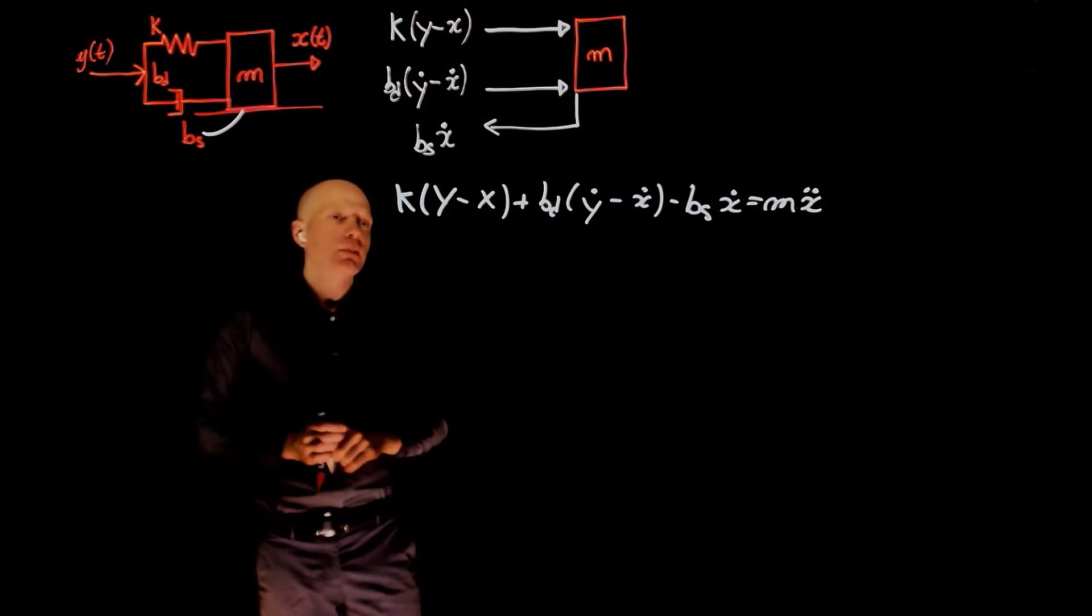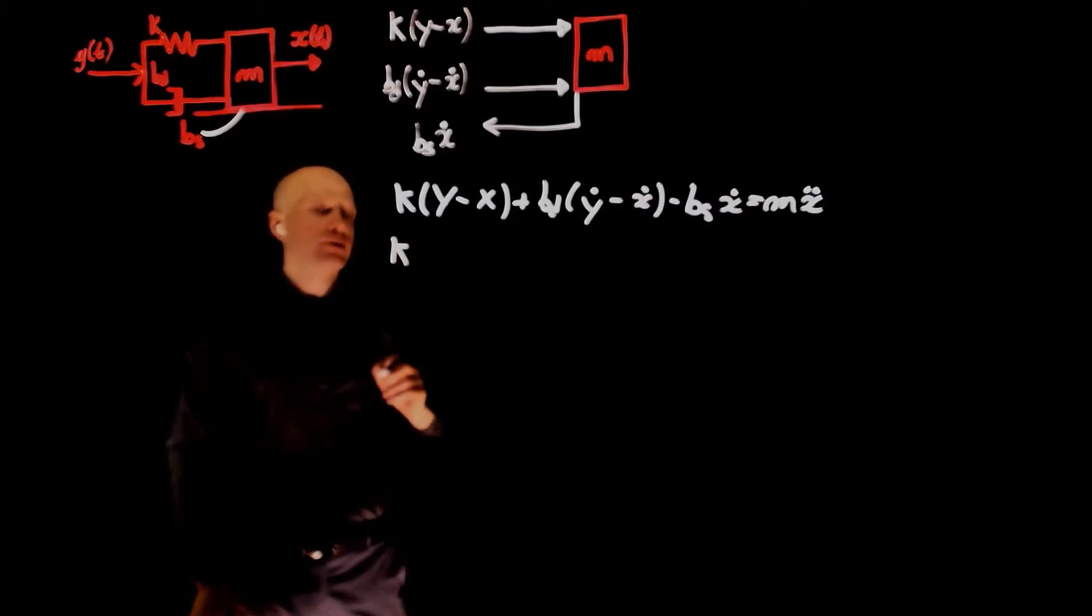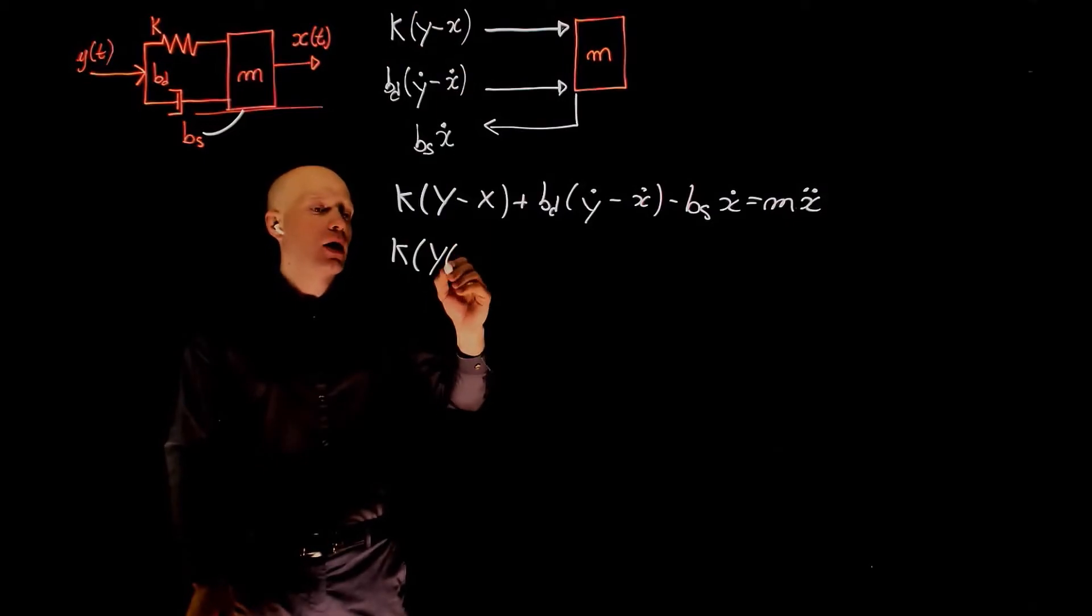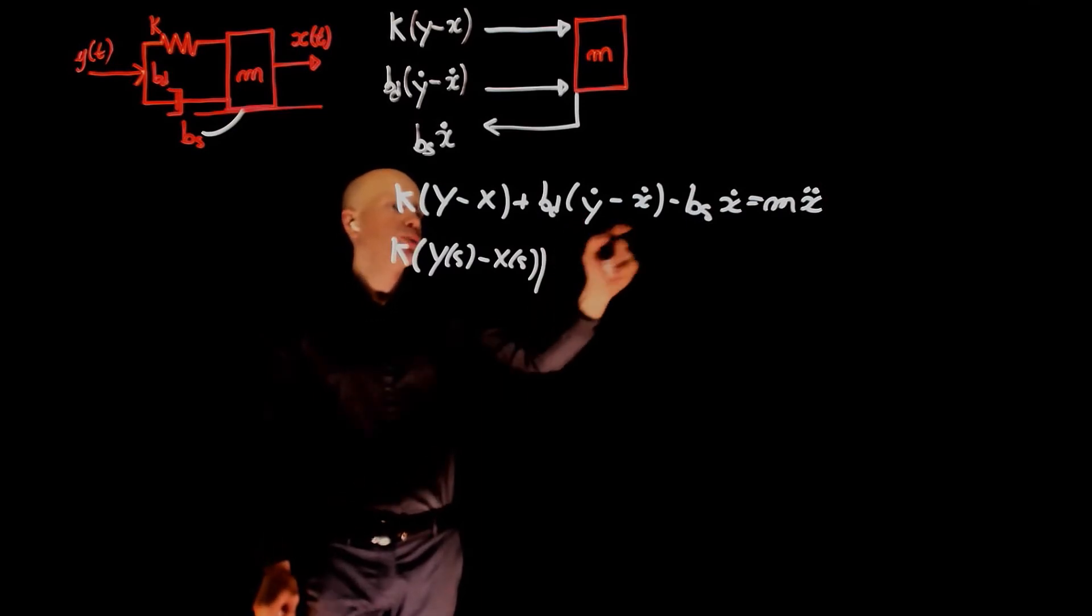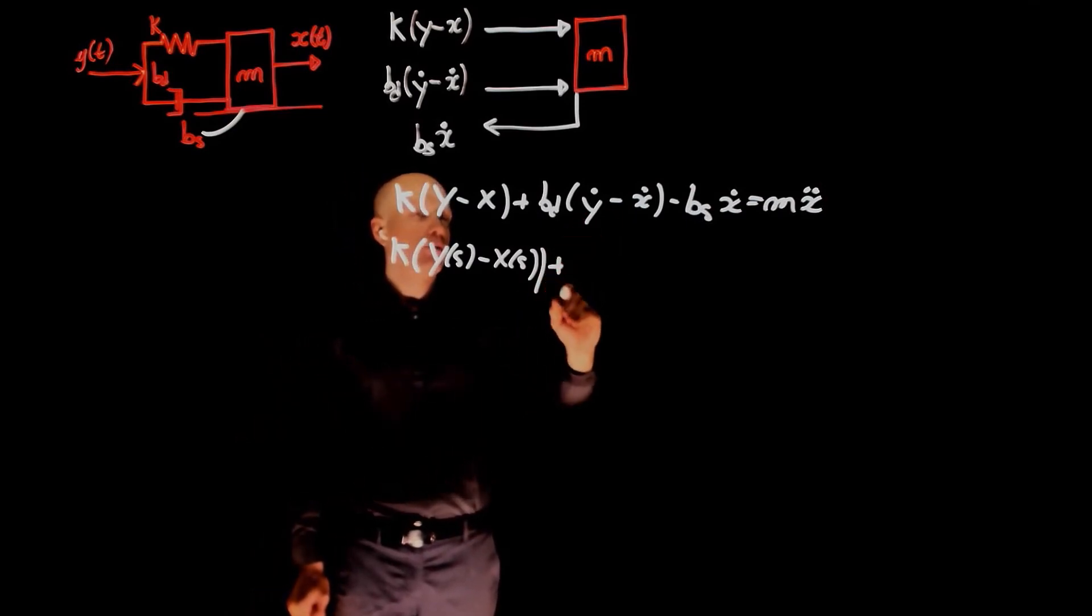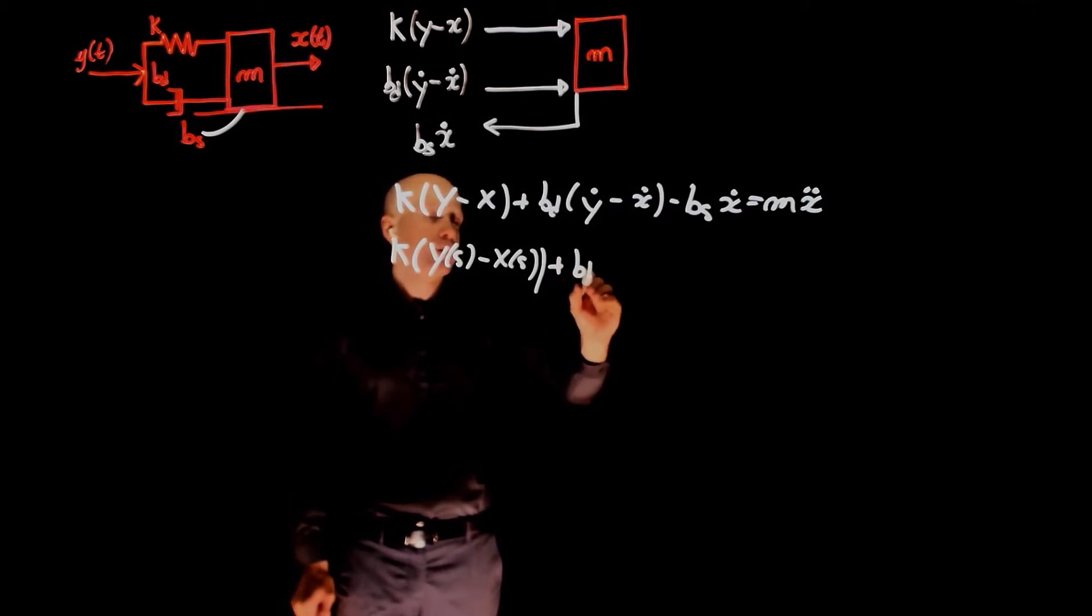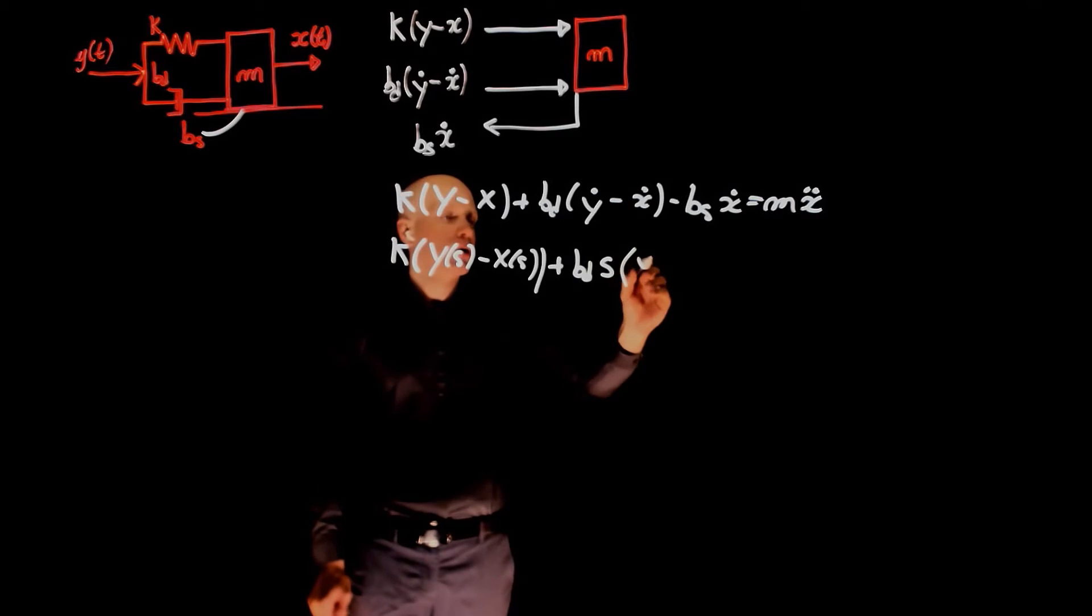We can now take the Laplace transform of this expression. The Laplace transform gives k, y becomes y(s), x becomes x(s). The derivative of x and y in the frequency domain is simply the variable multiplied by s, so bs times y(s) minus x(s).